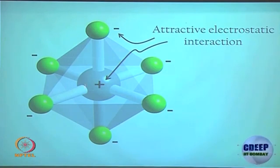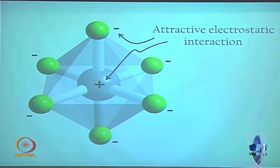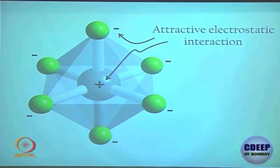All other orbitals — d_xy, d_yz, d_xz — are not facing the ligands directly; they sit in between the ligand axes. Therefore they are not repelled as strongly and are relatively stabilized compared to d_x²-y² and d_z².